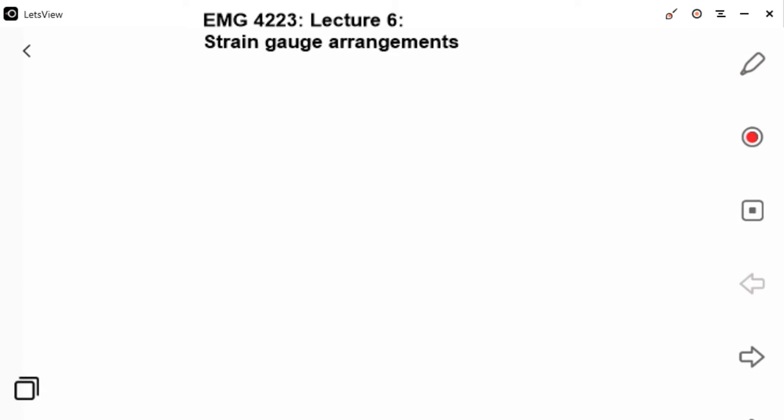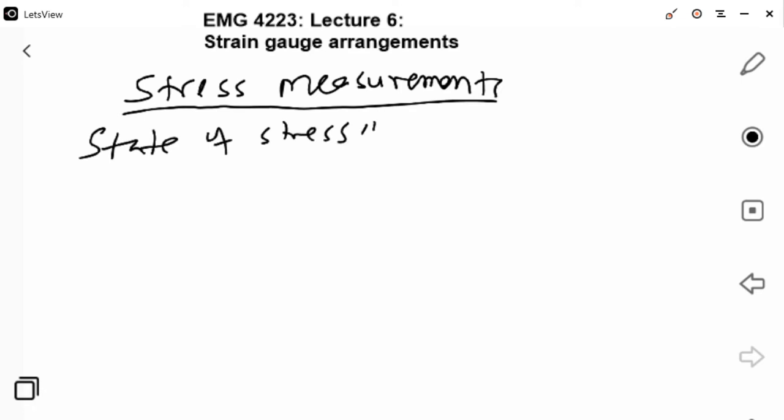Welcome again to Lecture 6. In this lecture we are talking about strain gauge arrangements. When strain gauges are used in measurements, especially for stress measurements, it is important to understand the state of stress which the beam or body is under. When we talk about arrangements, these are cases of the states in which the strain gauge is being used to measure.